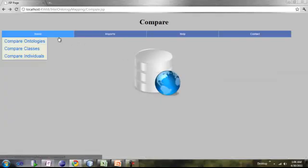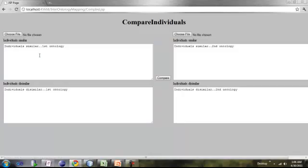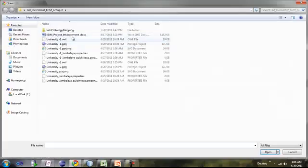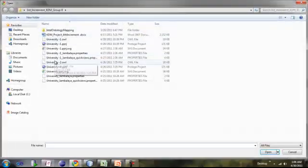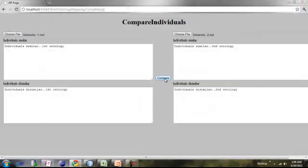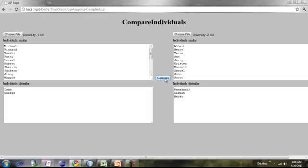Now let's compare individuals. Importing ontologies and comparing them. The top one gives the similar individuals and the bottom one gives the dissimilar individuals.